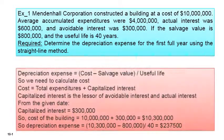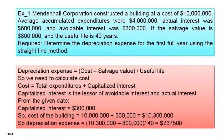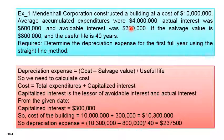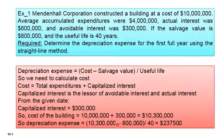For depreciation expense, cost minus salvage value over useful life. We need to calculate cost: total expenditure is 10 million plus the capitalized interest. According to IFRS standard, capitalized interest is the lesser of avoidable interest and actual interest. Avoidable is 300, actual is 600, so the lower is 300. Cost of building equals 10 million plus 300 thousand = 10,300,000. Depreciation expense: 10,300,000 minus salvage value 800,000 over 40 years equals 237,500.